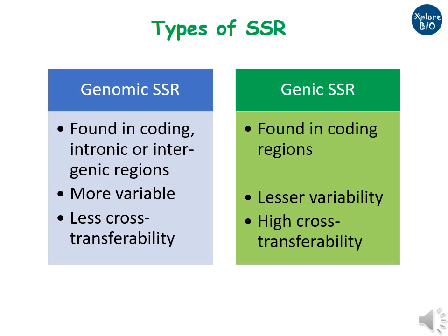Based on their occurrence in the genome, SSRs may be genomic or genic. Genomic SSRs may belong to coding, non-coding, or intergenic regions, but genic SSRs are always found in coding regions. Genomic SSRs show more variability than genic SSRs, while genic SSRs are more cross-transferable to related species.